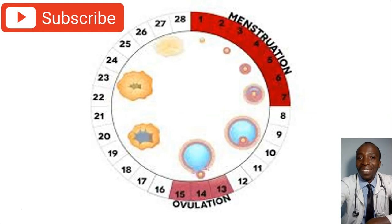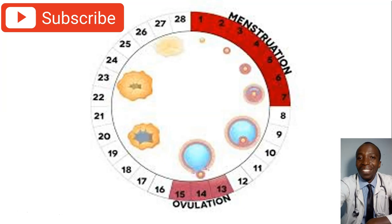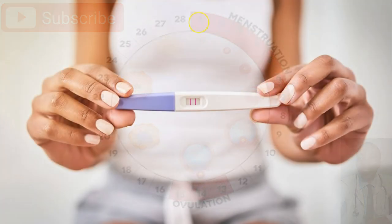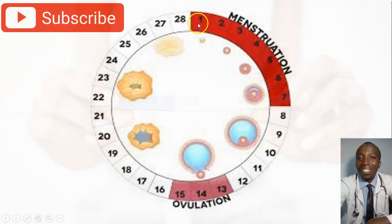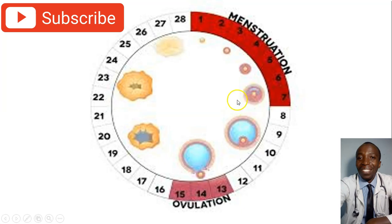We are going to first look at this example of the menstrual cycle, specifically covering the different phases. If you start your periods on the first — this is just an example but it could work for any day — in this cycle it is a 28-day cycle. Assuming you start seeing your periods on the first, you see them on the second, third, fourth, fifth, sixth, and seventh. Those days are called the days of menstruation.